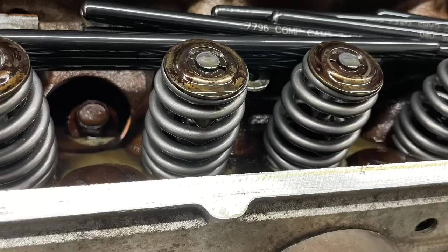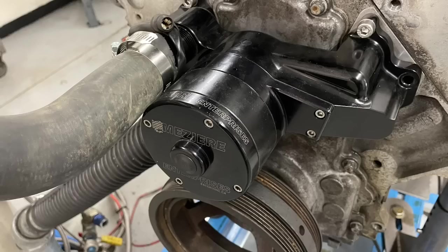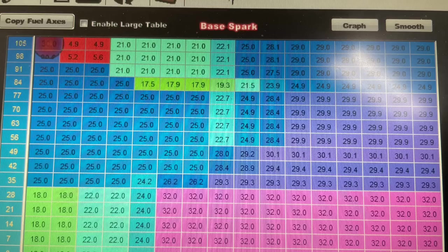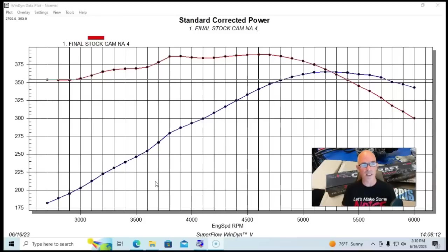It had the 799 heads on it. We did put a valve spring upgrade on it. For this test, it had the factory truck intake manifold and throttle body. It had our Mazira electric water pump. We were running it with a Holley HP management system.